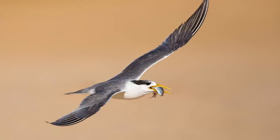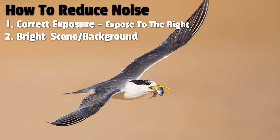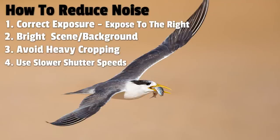So what's the best way to reduce the amount of noise in the field? The most important thing is to ensure you have the correct exposure — use a histogram and expose to the right. Be aware of the brightness of your background and try to use brighter scenes. Try to avoid cropping your images too much. You can use slower shutter speeds to allow lower ISO settings, and consider upgrading to a camera that handles high ISO well if noise is a serious issue for you.